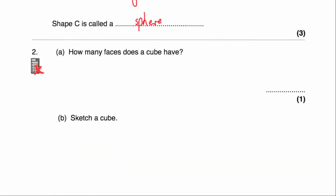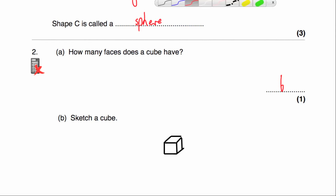Question number 2 says, how many faces does a cube have? If you consider a dice, a dice has 6 faces — it's numbered 1 through 6. So a cube has 6 faces. Part B says to sketch a cube. I'll start by drawing the square at the front, then do diagonal lines going backwards for the 3D perspective, and then join them up. That's my sketch of a cube.